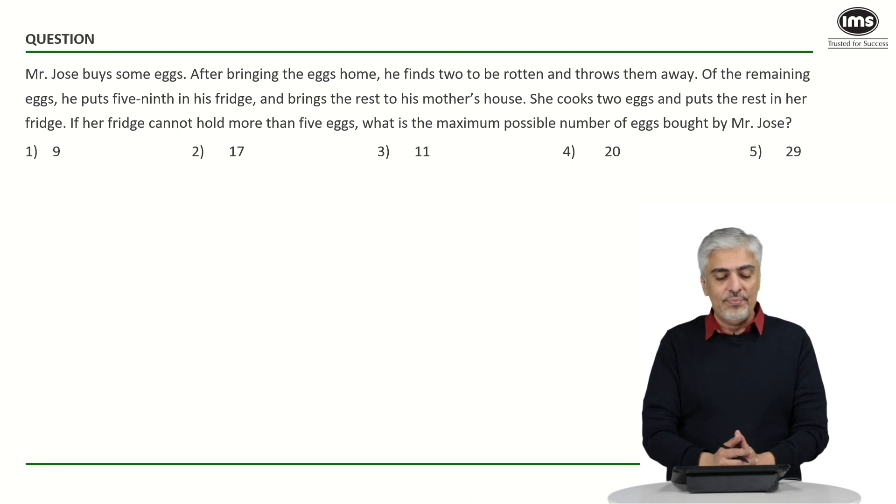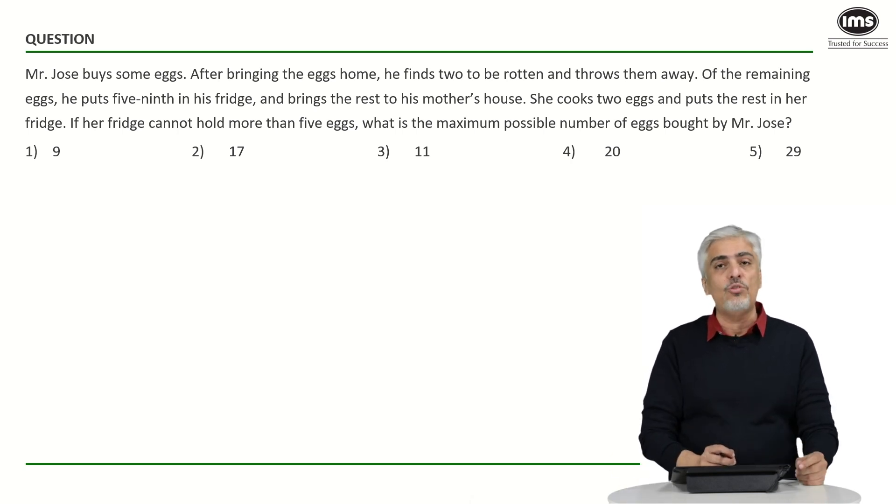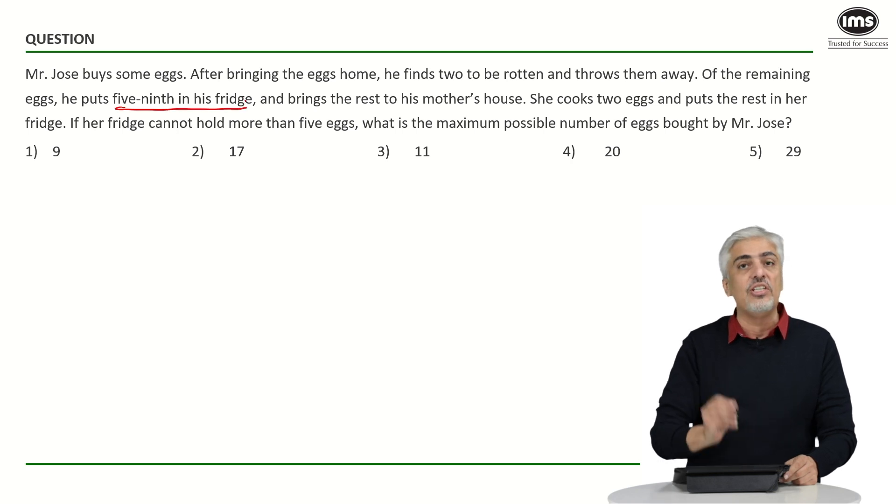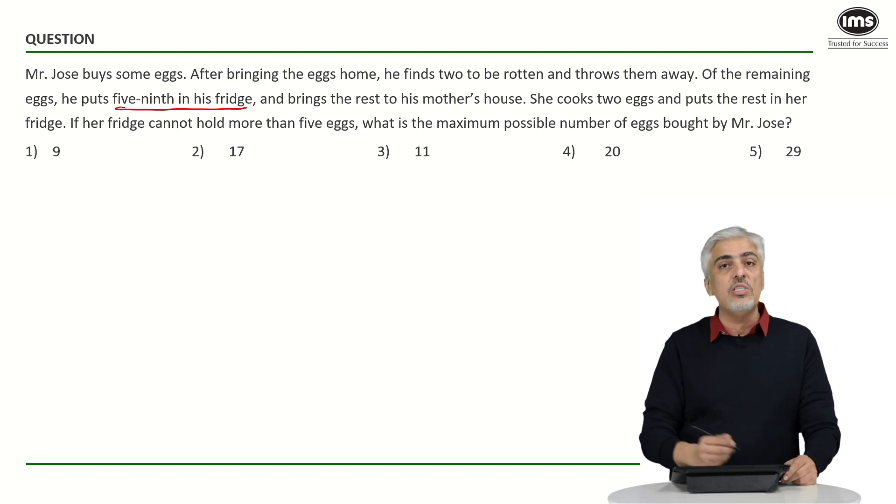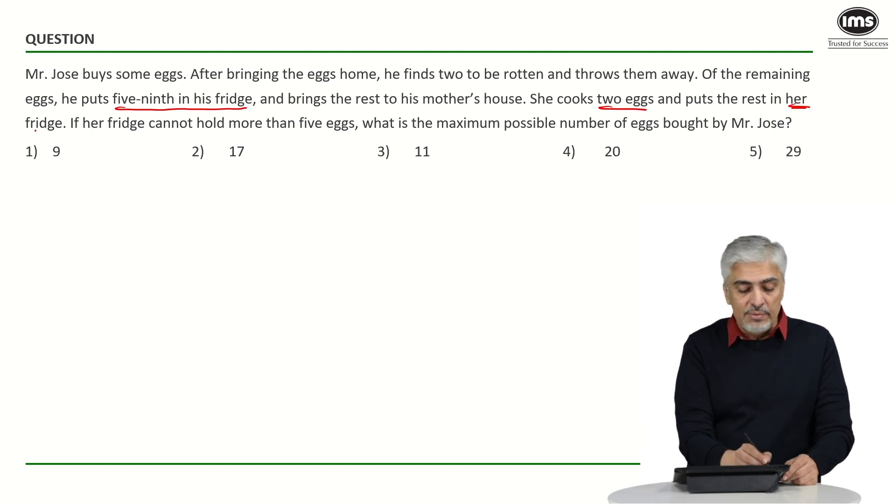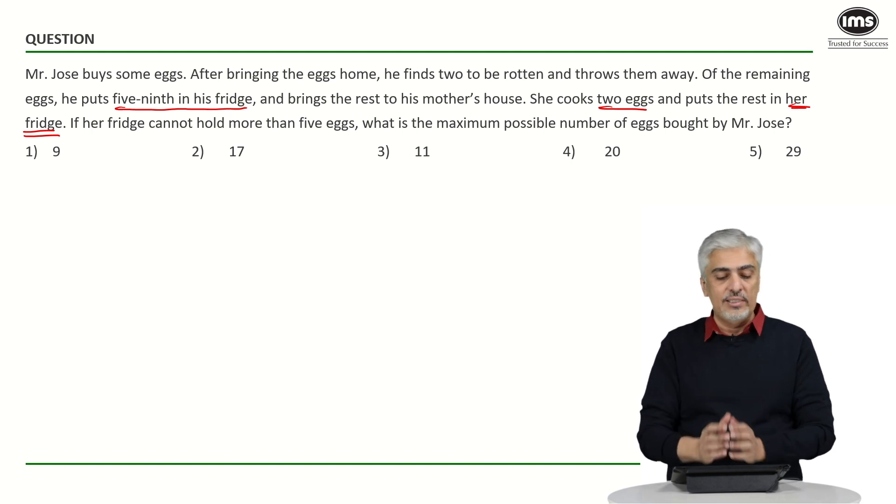Mr. Jose buys some eggs. After bringing the eggs home, he finds two to be rotten and throws them away. So whatever eggs he bought, out of that two were rotten, he throws them away. Of the remaining eggs, he puts 5 ninth in the refrigerator or in the fridge and brings the rest to his mother's house. She cooks two eggs again and puts the rest in her fridge. Please remember there are two refrigerators they are talking about, one at Mr. Jose's house and one at the mother's house.